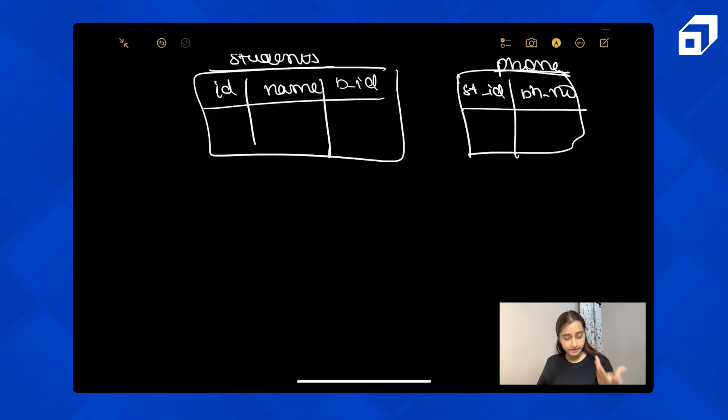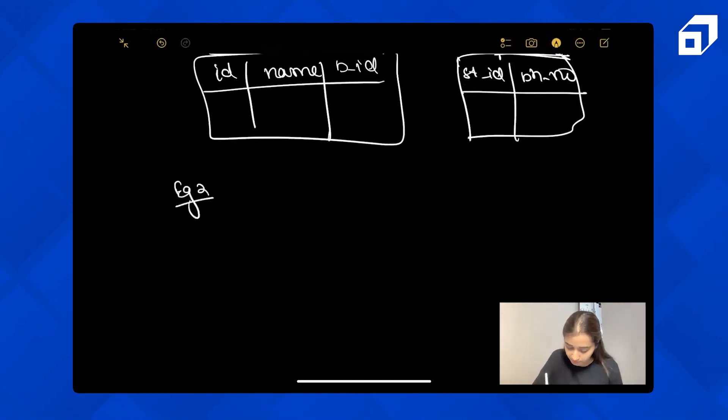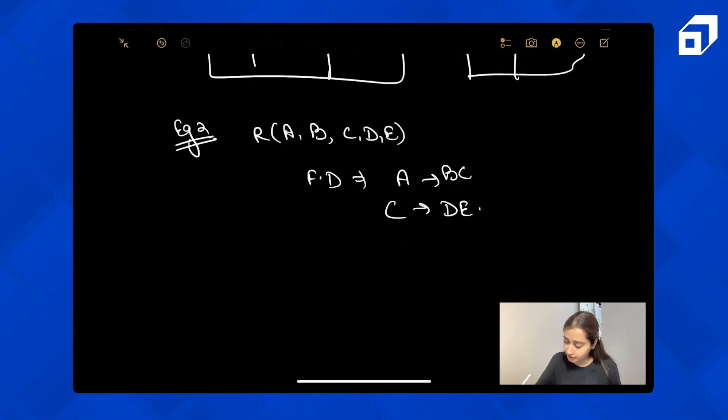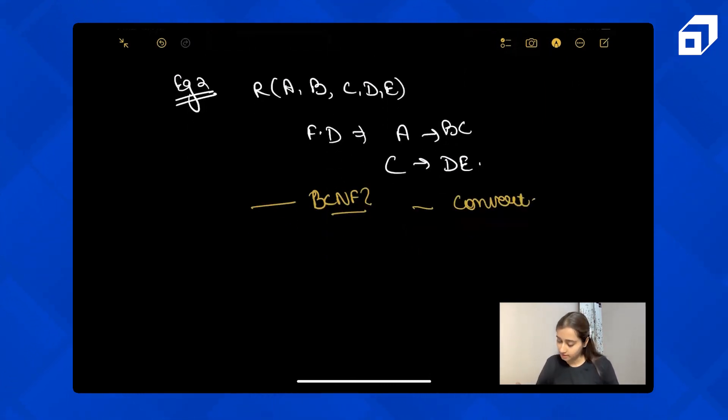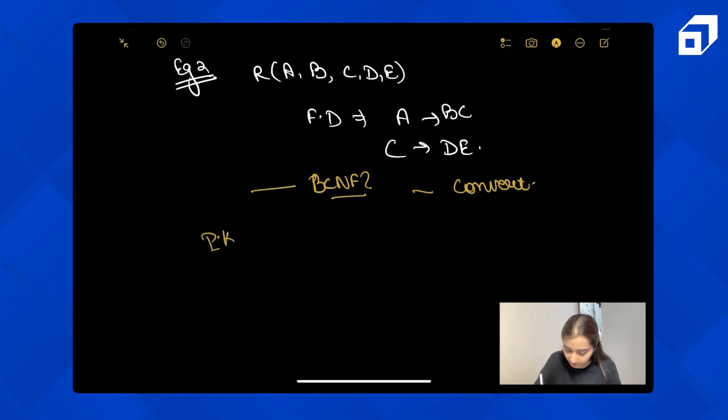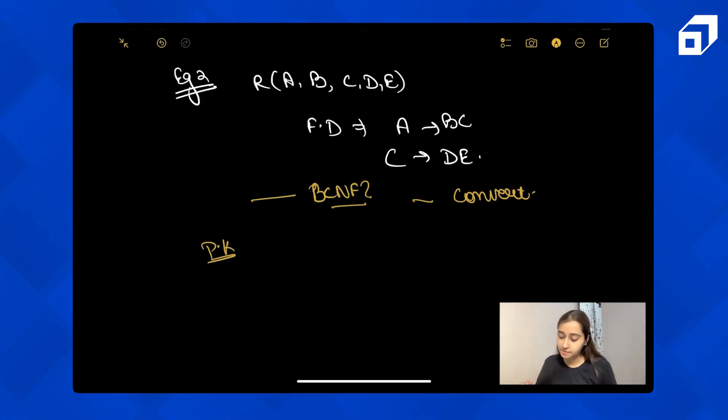So let's again take an example. Take example 2 for BCNF. Let's take a relation A, B, C, D, E given to you, and functional dependencies as A to BC and C to DE. The very first thing is you have to check, is it in BCNF or not? If it is not, you have to convert it. Let's check that. First we need to find the primary key of this table. Pause the video, try to solve it on your own.